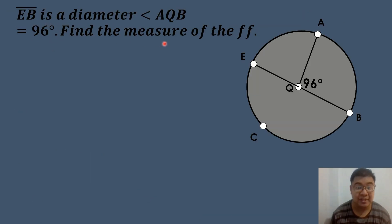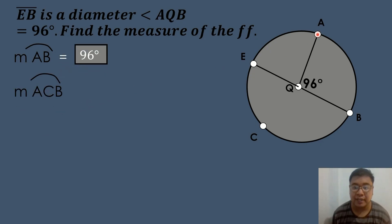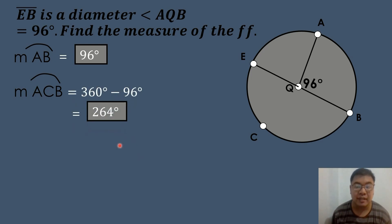Let's have another example. Segment AB is a diameter of circle Q, and angle AQB equals 96 degrees. Find the measure of the following. First, the measure of arc AB: since the central angle AQB is 96 degrees and its intercepted arc is arc AB, therefore arc AB equals 96 degrees. Next, arc ACB (the major arc): 360 degrees minus 96 degrees equals 264 degrees, so arc ACB equals 264 degrees.